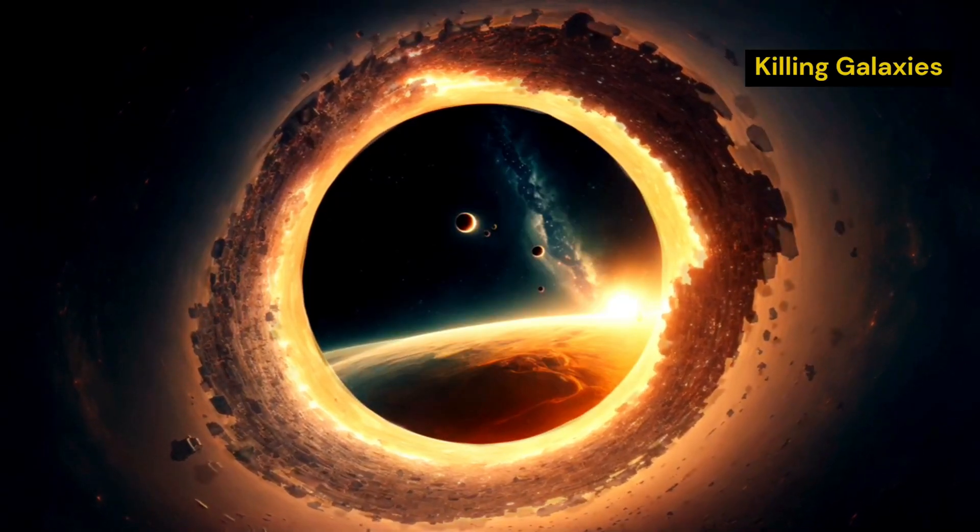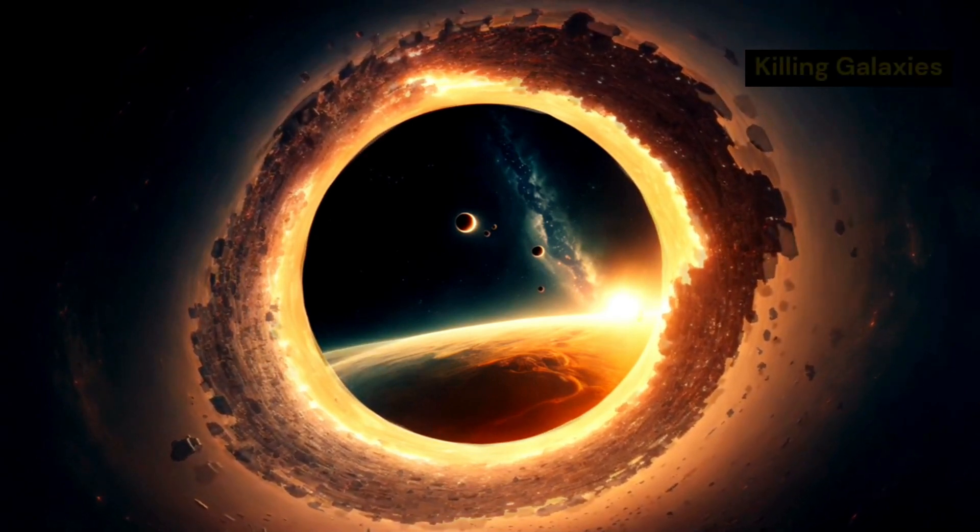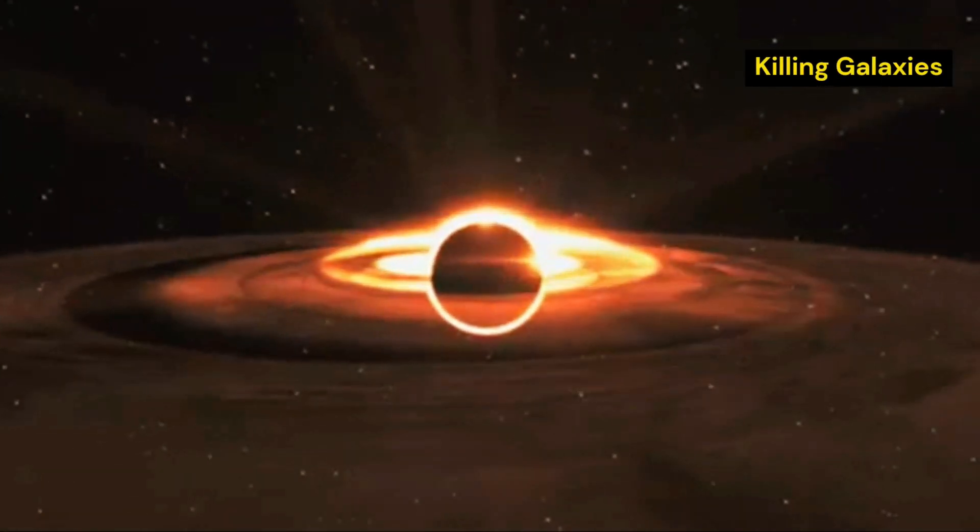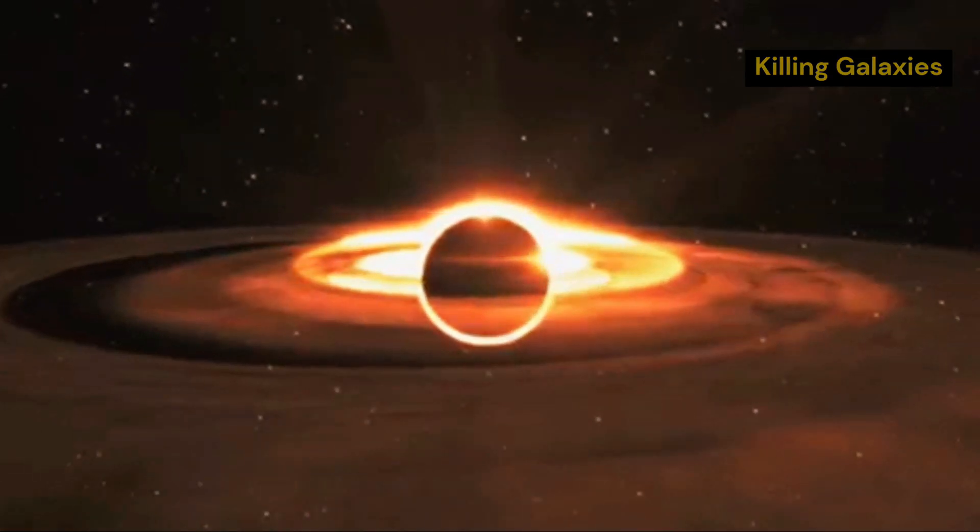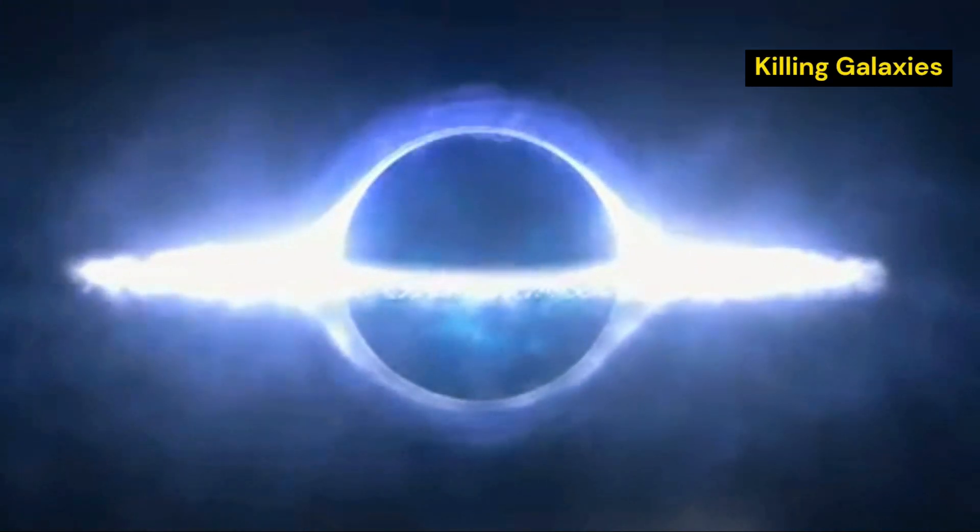Quasars are extremely bright objects powered by supermassive black holes at the centers of galaxies. As gas and dust fall into a supermassive black hole, they heat up to incredibly high temperatures. This causes the quasar to shine brightly, often outshining the entire galaxy it inhabits.